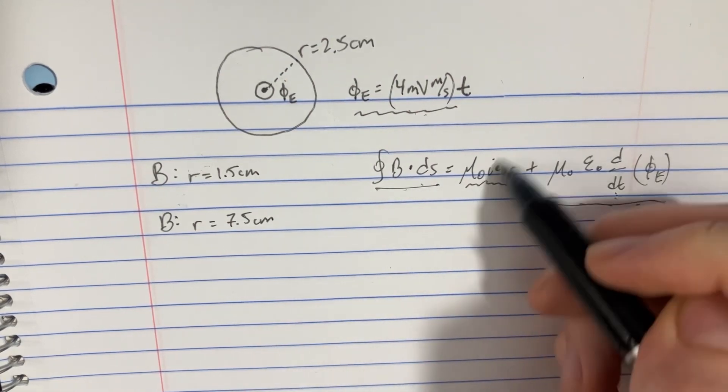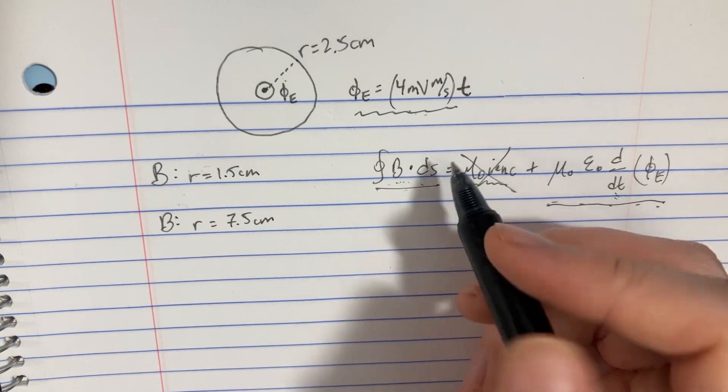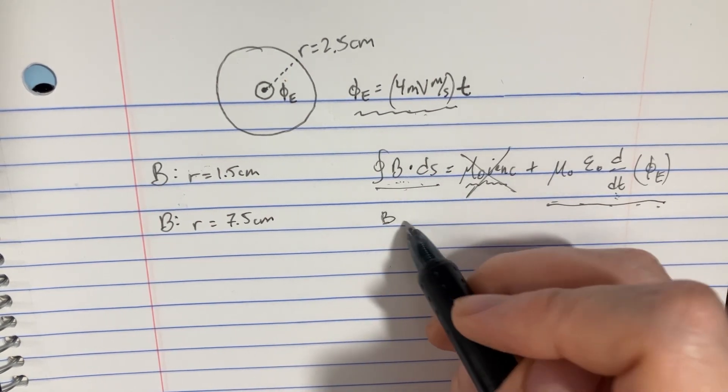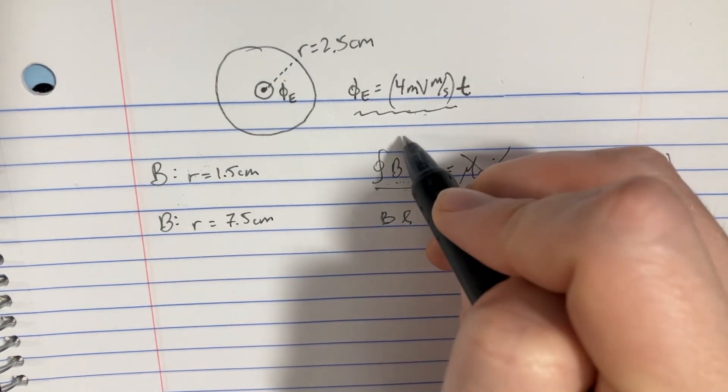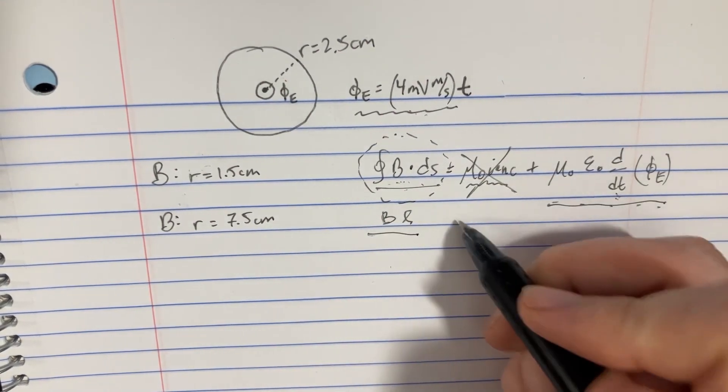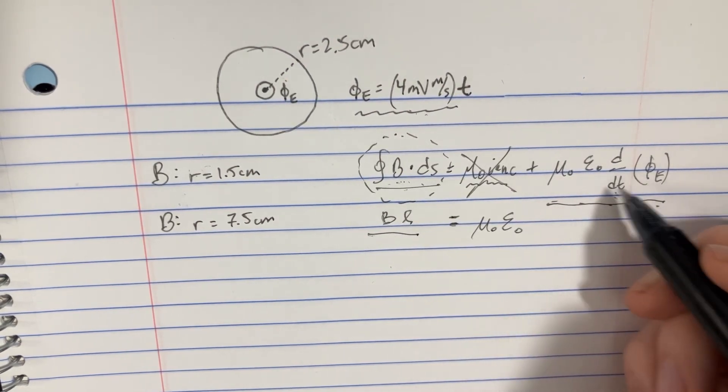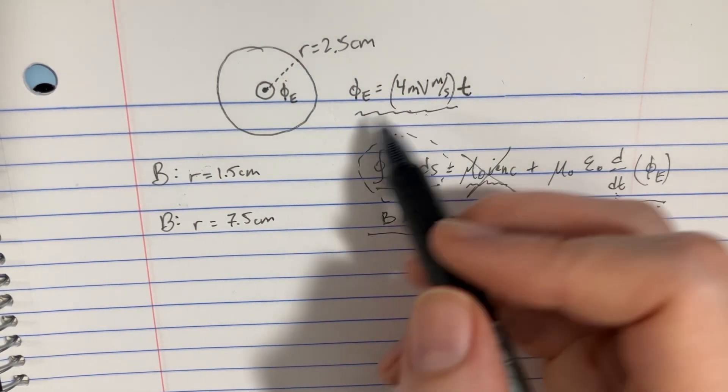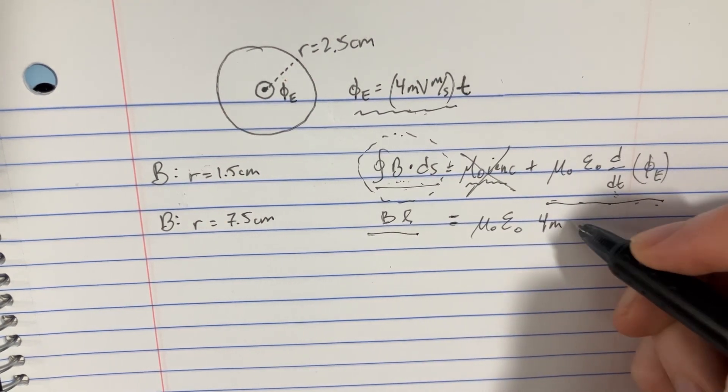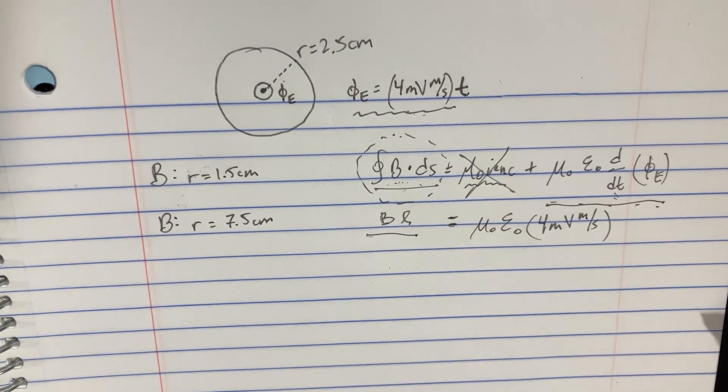And this side of the equation, first of all this is going to go away, but this side of the equation is a little bit interesting because it's actually going to be more like B times the length of the loop that you're trying to make. And on the other side, we're just going to solve this. So mu naught, and then derivative of this thing is just going to be 4 millivolts.